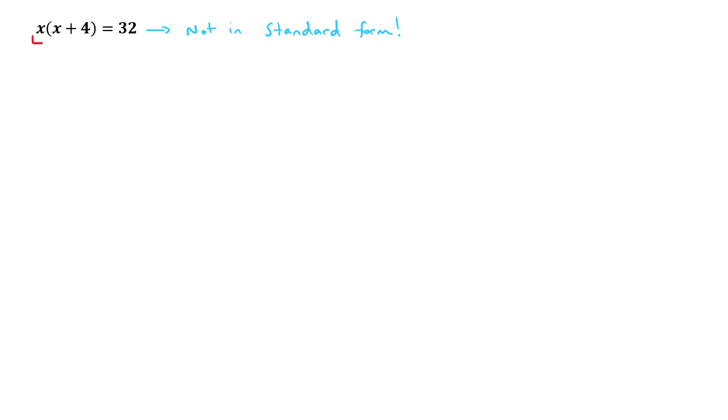And whenever you see a bracket like this, you know the chances are you need to distribute the value in. So in this case, distribute the x into the bracket. So by doing that, we can see that x times x will give us x squared. And x times 4 will give us 4x. And that will equal 32.